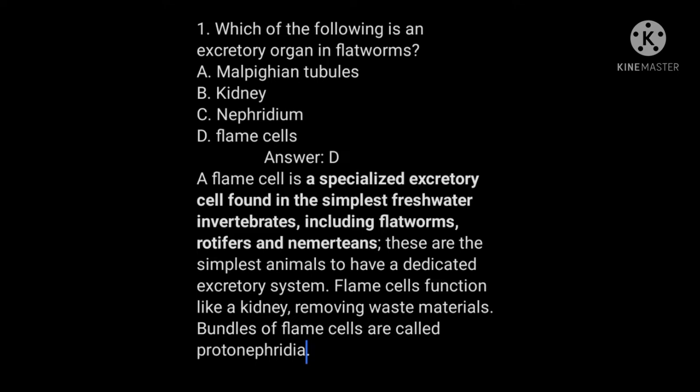The first question: which of the following is an excretory organ in flatworms? A) Malpighian tubules, B) Kidney, C) Nephridium, D) Flame cells. The answer is D, which is flame cells.